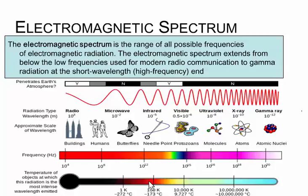The electromagnetic spectrum is the range of all possible frequencies of electromagnetic radiation. The electromagnetic spectrum extends from below the low frequencies used for modern radio communication up to gamma radiation at the short wavelength high-frequency end.